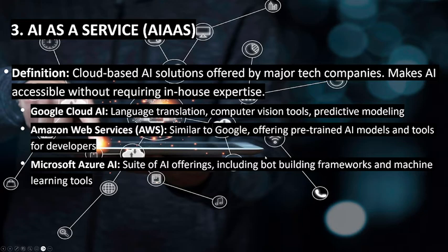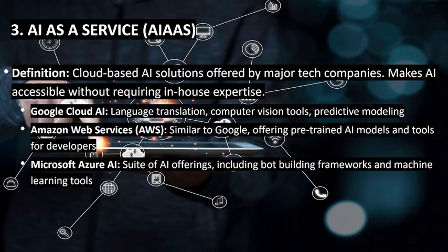Third is AI as a Service, or AIaaS — cloud-based AI solutions offered by major tech companies that make AI accessible without requiring in-house expertise. Google AI offers language translation, computer vision, and predictive modeling tools. AWS offers pre-trained AI models and tools for developers. Microsoft offers a suite of AI offerings including build frameworks and machine learning tools, and is also building Copilot for Security to help make cybersecurity predictions.